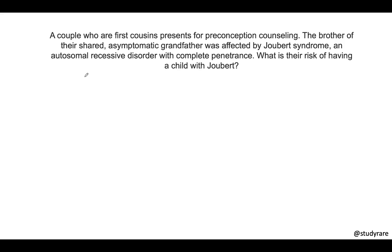I'll start by reading the question we'll be discussing today. A couple who are first cousins presents for preconception counseling. The brother of their shared, asymptomatic grandfather was affected by Joubert syndrome, an autosomal recessive disorder with complete penetrance. What is their risk of having a child with Joubert? First thing to note is that we're being asked about the couple's risk of having a child with a recessive disease, and we're told this couple is consanguineous — they share a set of grandparents. Whenever there's a risk calculation dealing with consanguinity, I tend to approach these with extra precaution.